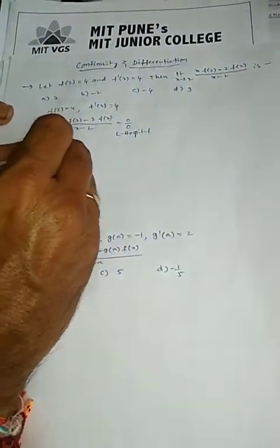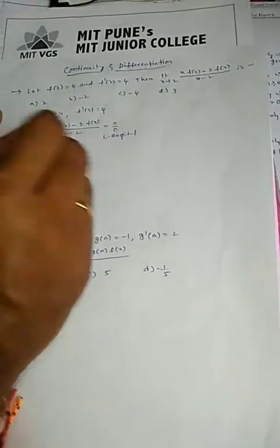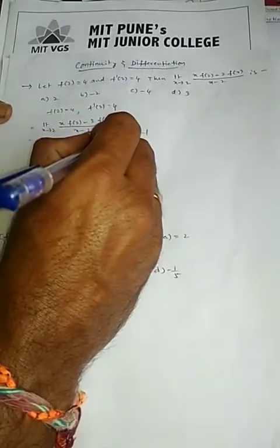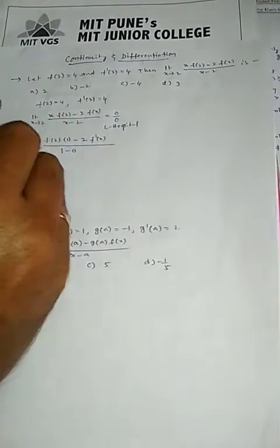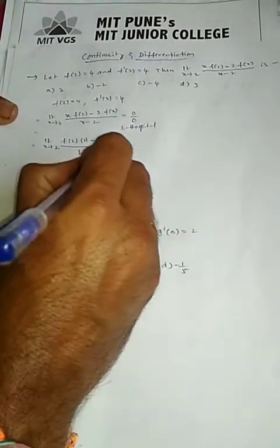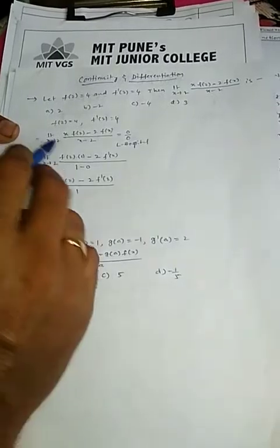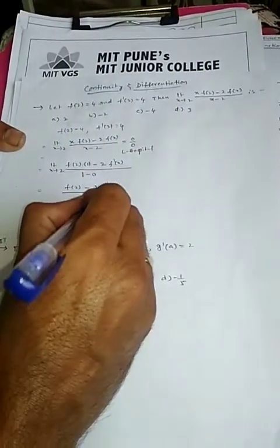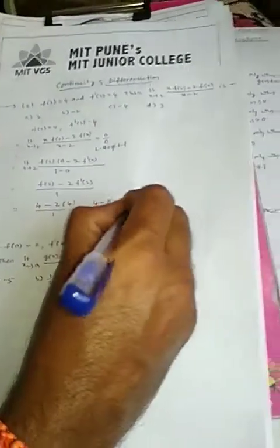Applying L'Hôpital's rule: f(2) is a constant, so the derivative of f(2)·x is f(2)·1. The derivative of 2·f(x) is 2·f'(x), and the derivative of the denominator (x - 2) is 1. Substituting the limit gives f(2) - 2·f'(2) = 4 - 2(4) = 4 - 8 = -4.